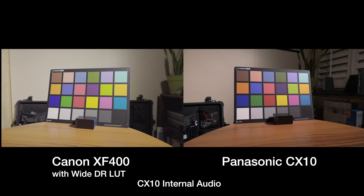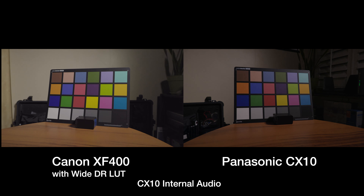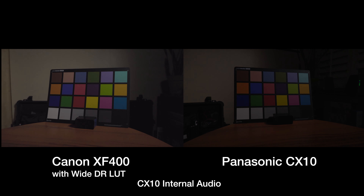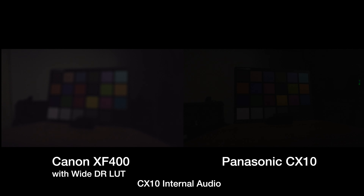Now I'm going to do a low light test. I'm indoors right now, pointing at a color chart. I have both cameras close together, but they have to be at different angles. They're both zoomed all the way out so they're at their widest aperture — on the Canon it's F2.8, on the Panasonic it's F1.8. On the Panasonic it's 0 dBs of gain, 422 10-bit, 150 megabits, UHD 30p, Cine D picture profile, autofocus on, white balance at 5600.